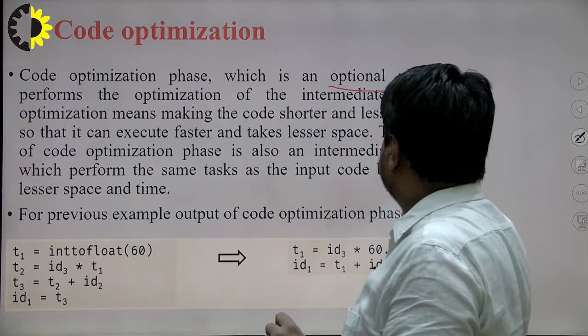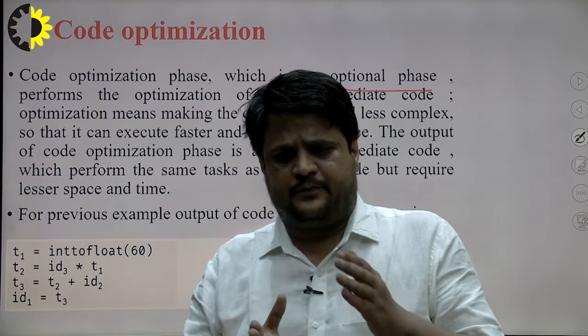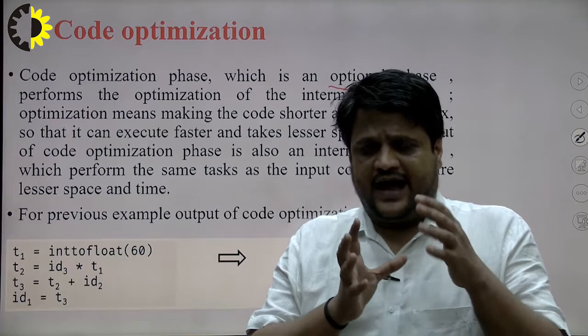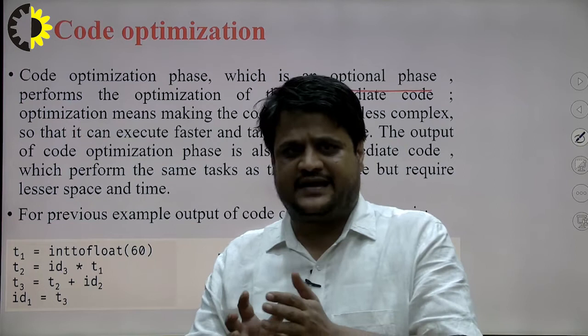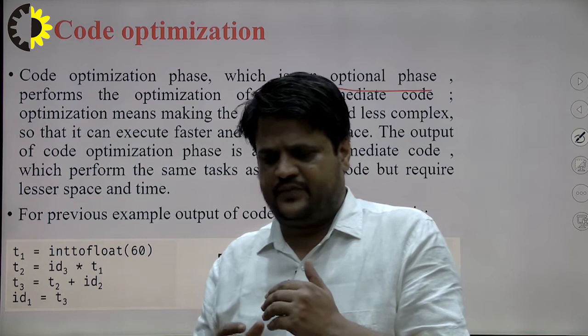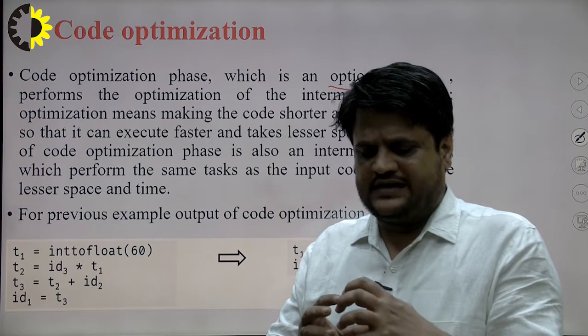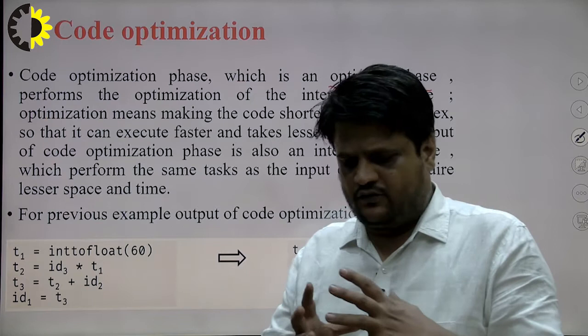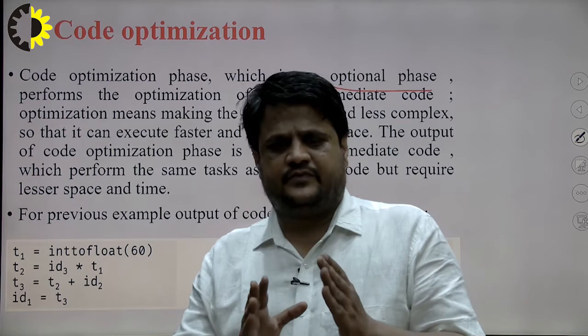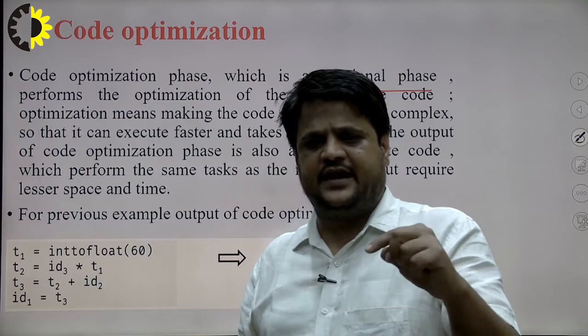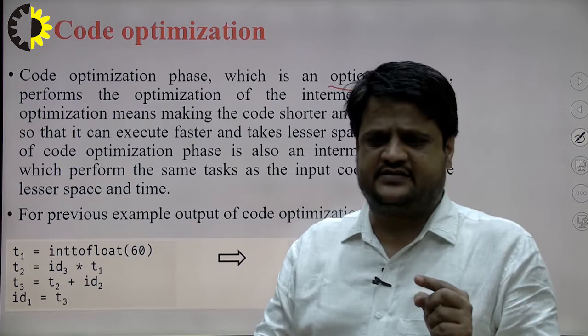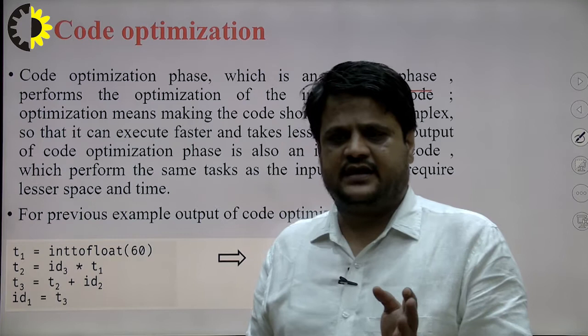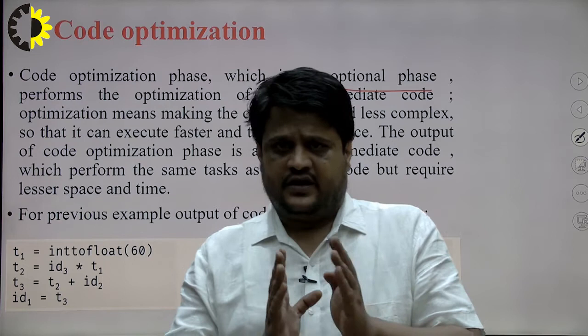Code optimization is not compulsory within the compiler because the results before and after optimization are the same. The only difference is that the intermediate code becomes less complex and shorter. We remove certain dead code, unconditional jumps, common subexpressions, etc. The working of both codes is the same; the only difference is that execution time becomes shorter because the code becomes shorter and less complex.